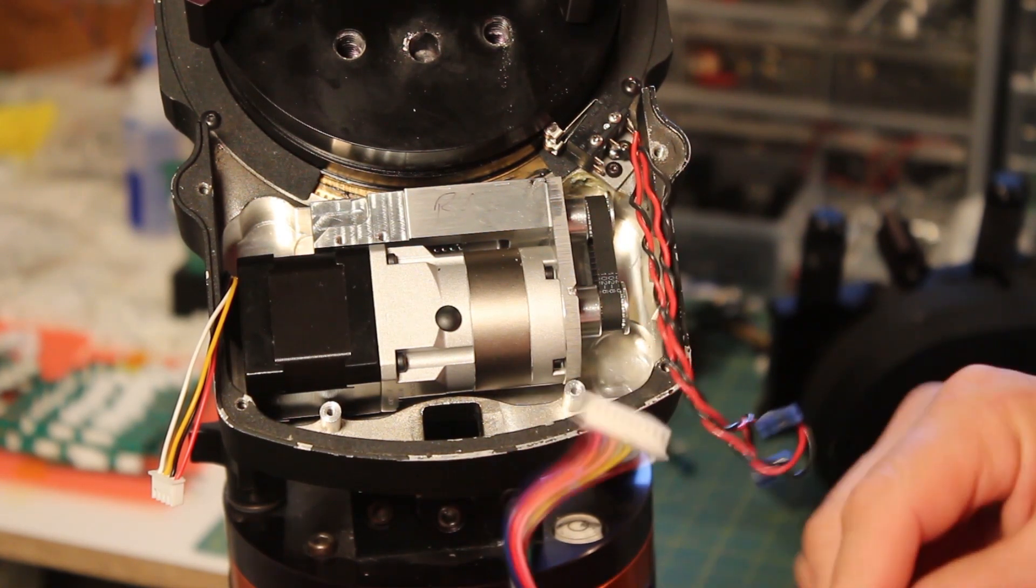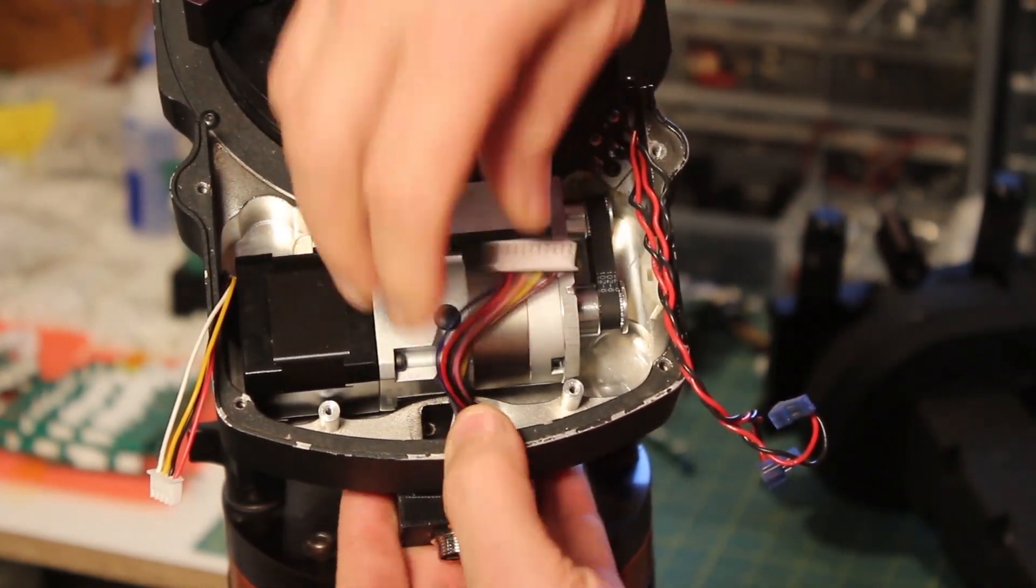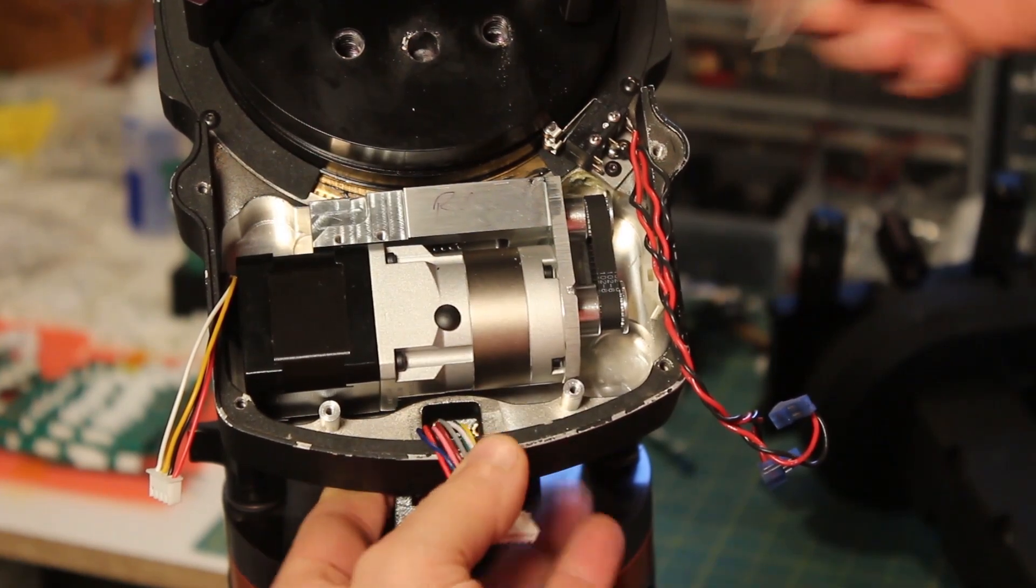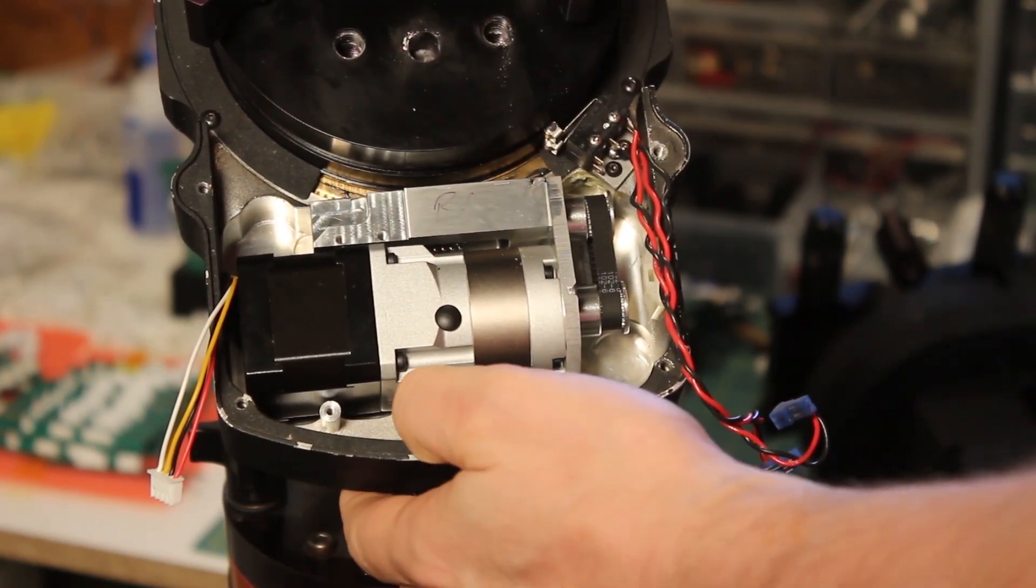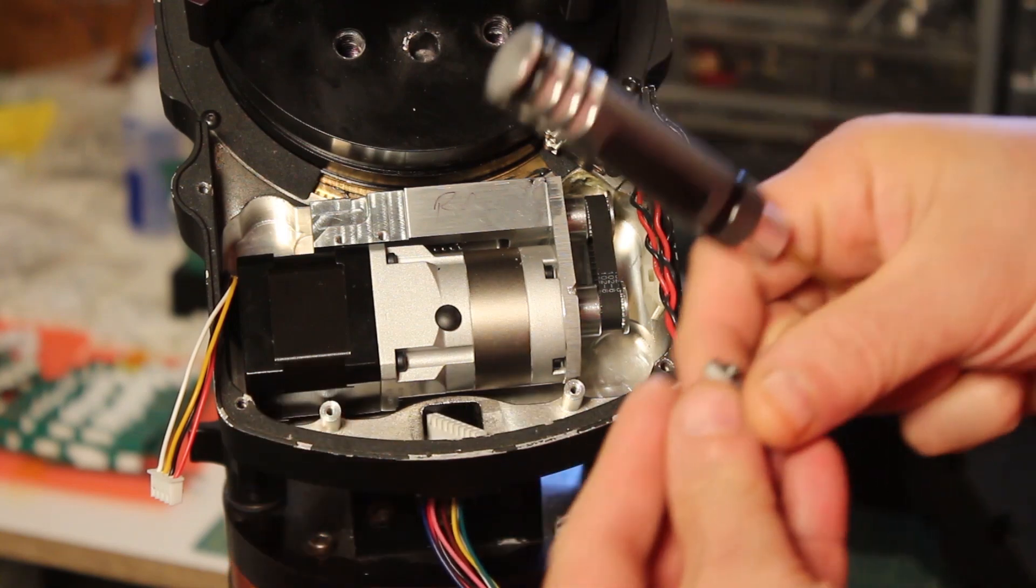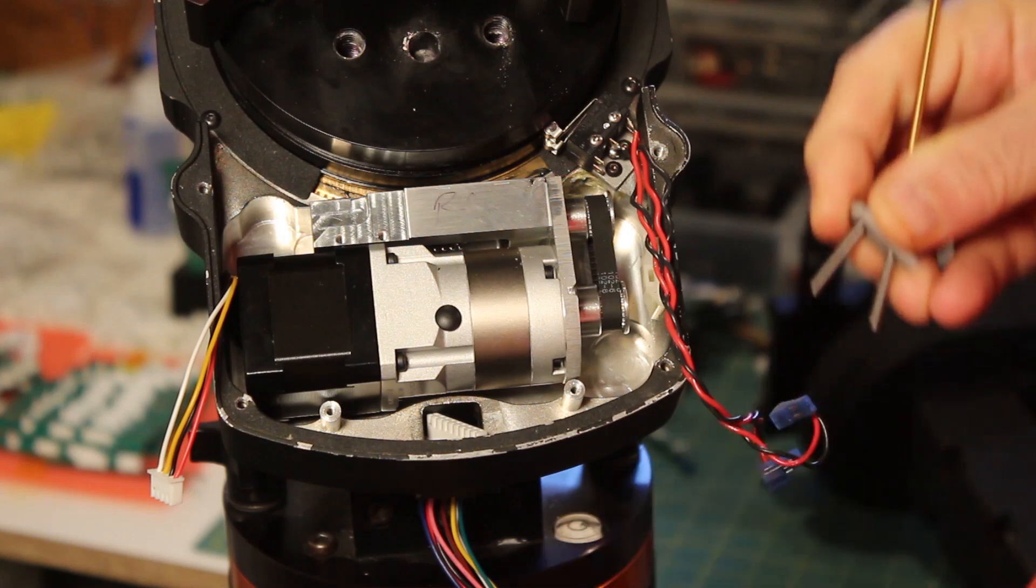And we are going to pass through this wire harness into the space where the PCB used to be. We will use this two millimeter wrench.